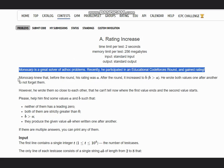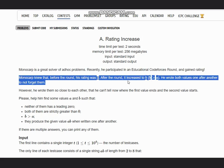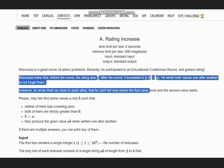Monocarp knew that before the round his rating was A. After the round it increased to B, where B is greater than A. He wrote both values one after another to not forget them. However, he wrote them so close to each other that he can't tell now where the first value ends and the second value starts.